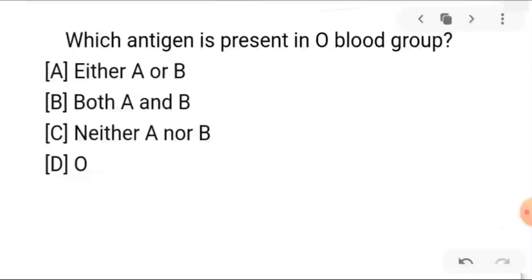Next, the second question is: which antigen is present in O blood group? So in blood group O, the antigen is asked — not the antibody. A is antigen A, B is both A and B, C is neither A nor B, and D is O antigen.